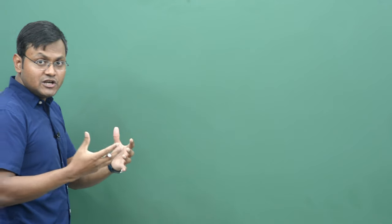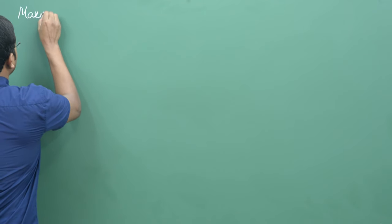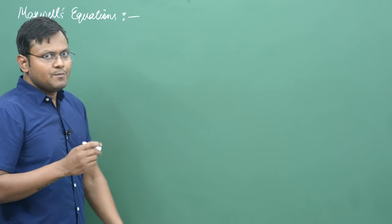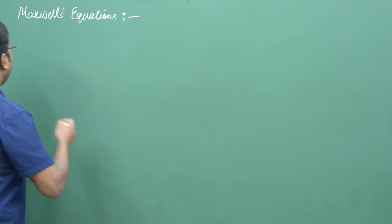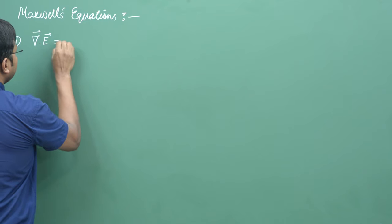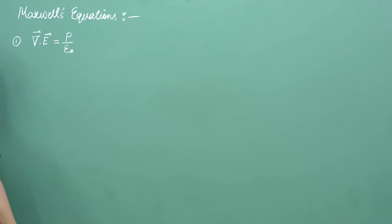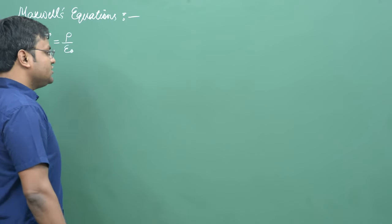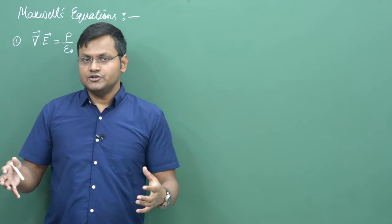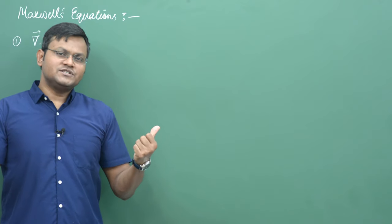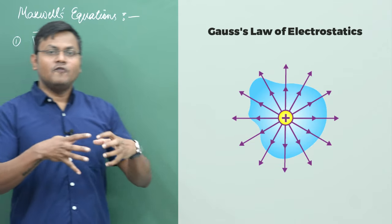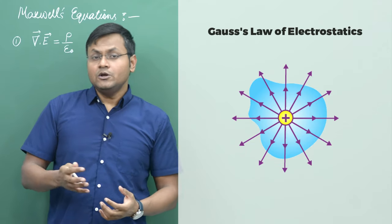They can be written in the differential form in the following manner. The first Maxwell's equation, also known as the Gauss law of electrostatics, is essentially the divergence of electric field equal to rho upon epsilon naught, where epsilon naught is the permittivity of free space and rho is the charge enclosed in a volume. This equation gives us an idea about the relationship between static electric fields and electric charges. Electric fields are always pointed outward from positive electric charges and towards negative electric charges. What the first equation tells us is that the net outflow of electric field lines from a closed surface is equal to the total amount of charge contained within that particular volume.